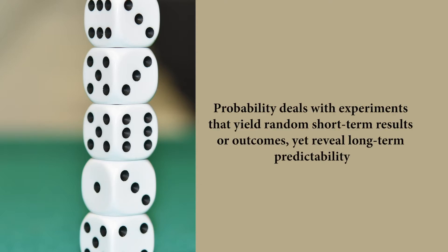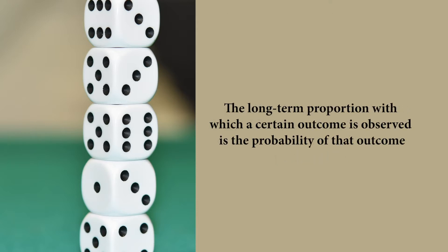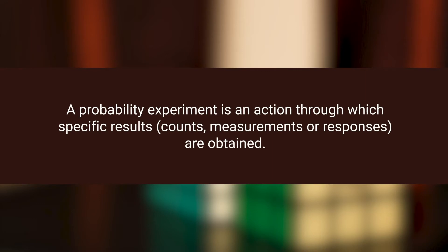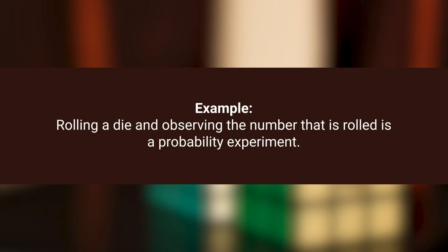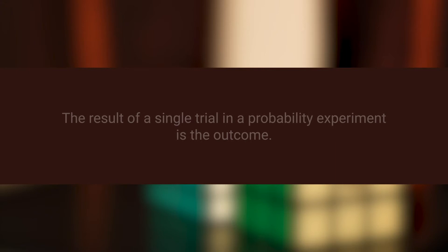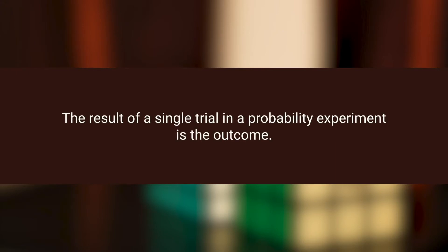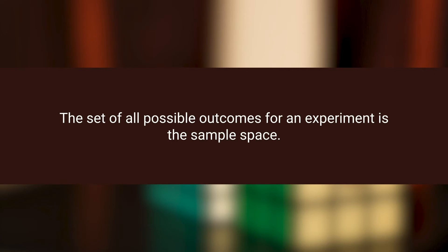Probability deals with experiments that yield random short-term results or outcomes, yet reveal long-term predictability. The long-term proportion with which a certain outcome is observed is the probability of that outcome. A probability experiment is an action through which specific results, counts, measurements, or responses are obtained. For example, rolling a die and observing the number that is rolled is a probability experiment. The result of a single trial in a probability experiment is the outcome. The set of all possible outcomes for an experiment is the sample space.